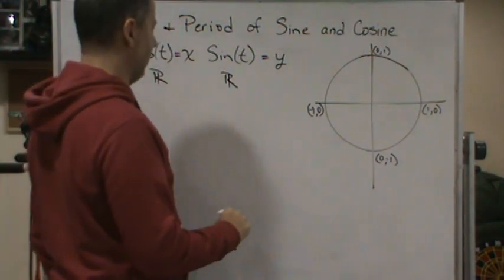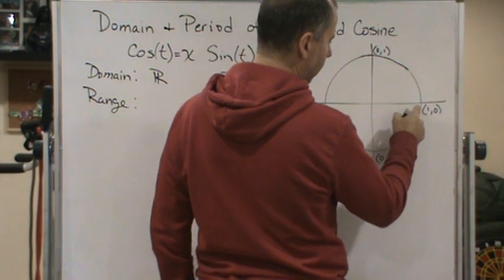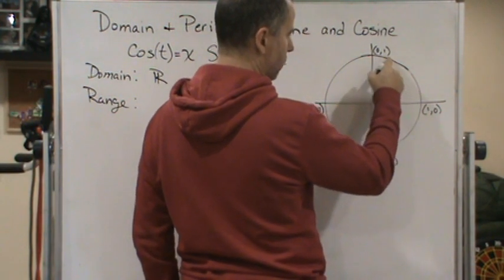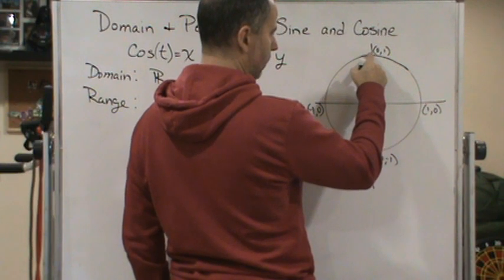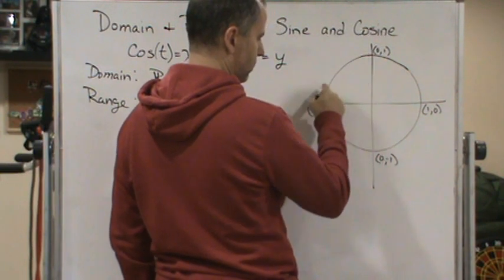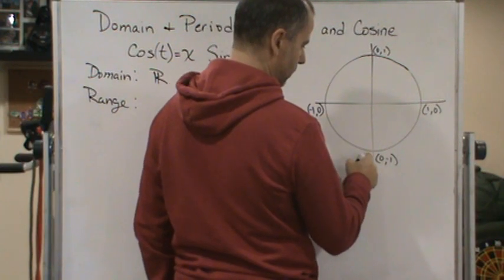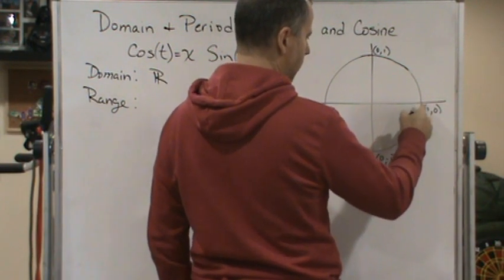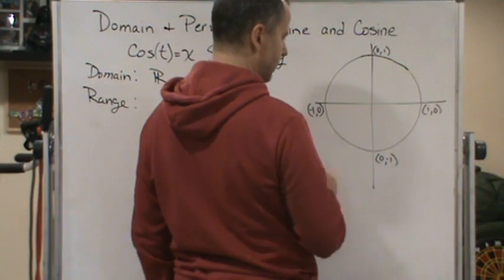So now look at the values of y and x. What happens? Here, x starts at 1. And as you travel around the circle, it goes to 0. And then it goes to negative 1. And then back to 0. And then back to positive 1. And then as you go around, it does the same thing.